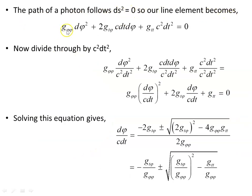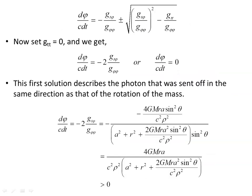The path of a photon follows ds² = 0. With dθ and dr set to zero, the line element reduces accordingly — you can imagine a spaceship holding position outside the black hole and releasing a photon in the direction of rotation. Dividing through by c² dt² gives a quadratic expression, which we solve using the quadratic formula to get dφ/c dt.